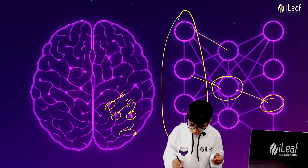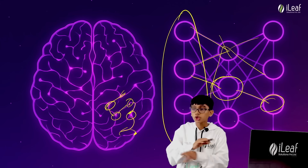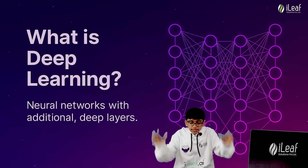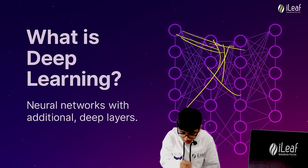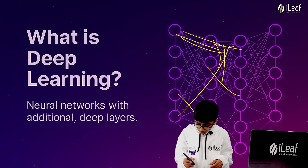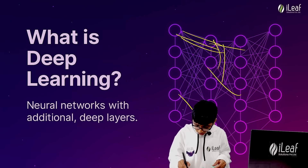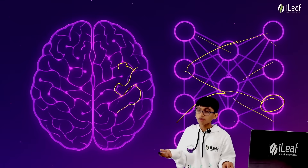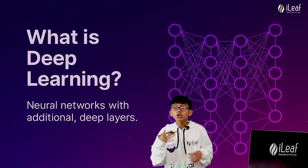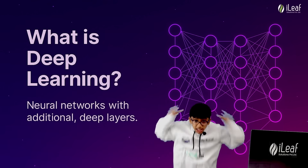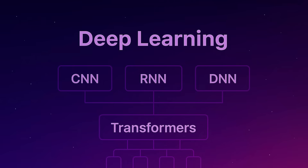We give the network some information, it thinks through it in many ways — it's jumbled and processes through lots of paths. Now, what is deep learning? Imagine the same neural networks but much, much more complicated. When you have many more neurons and many more connections — just like our brain — that is deep learning.